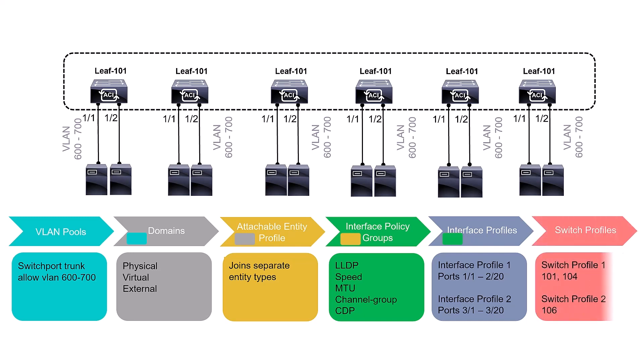Step six: create a Switch Profile. Specify which switches will activate those policies, then nest the previous interface profile into that final switch profile. These six steps in a chain form what we call an access policy. It might seem like a lot at first, but once you master it, you configure it once and then just plug in similar servers — and watch the automation happen.